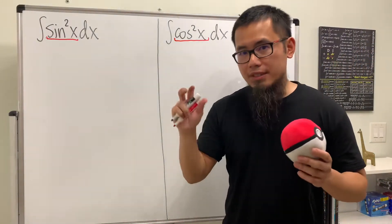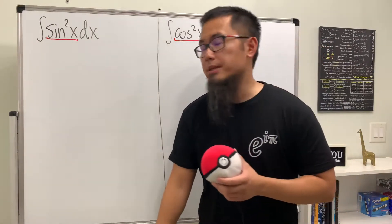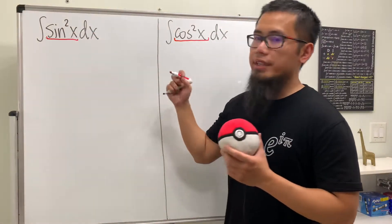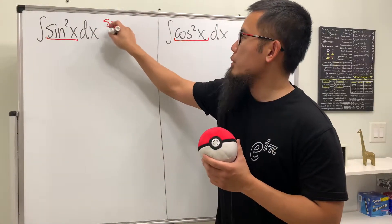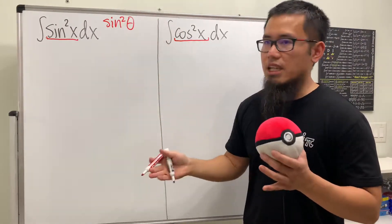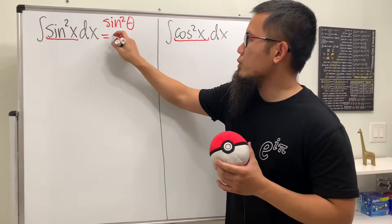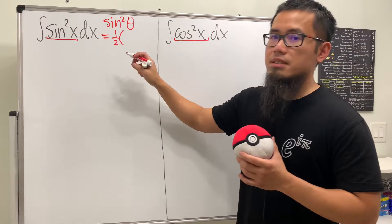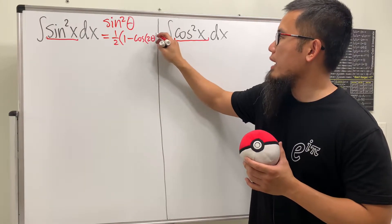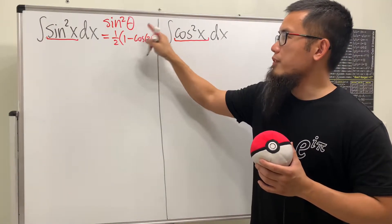Ideally speaking, we want to have sine to the first power or cosine to the first power when we integrate. So check this out. When we have sine squared x, we can actually use this one. Let me write it down right here for you guys. Sine squared, and let me use theta just in case sometimes you may have more things inside. But this right here is equal to 1 half times 1 minus cosine, and the input here is 2 theta. And the beauty of this is that this is cosine to the first power.